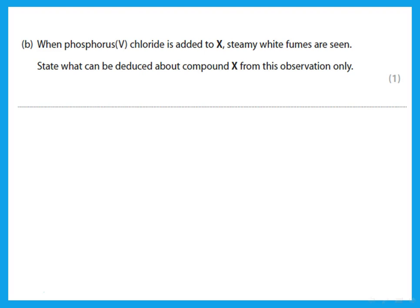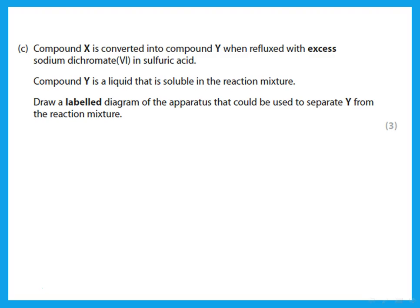When phosphorus pentachloride (PCl₅) is added to X, steamy white fumes of HCl are seen. PCl₅ gives steamy white fumes when added to a substance containing an OH group, such as an alcohol or a carboxylic acid. This means X contains an OH group and is either an alcohol or a carboxylic acid. Compound X is then converted into compound Y when refluxed with excess sodium dichromate, an oxidizing agent that oxidizes primary alcohols to acids and secondary alcohols to ketones.